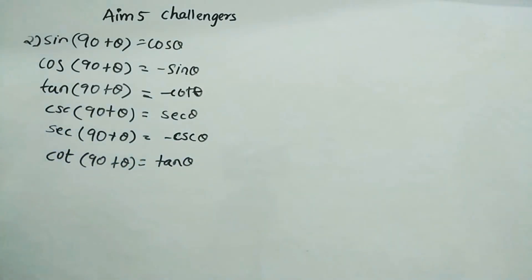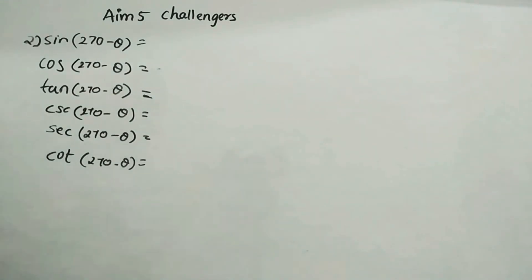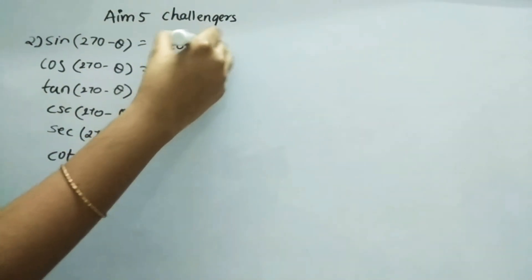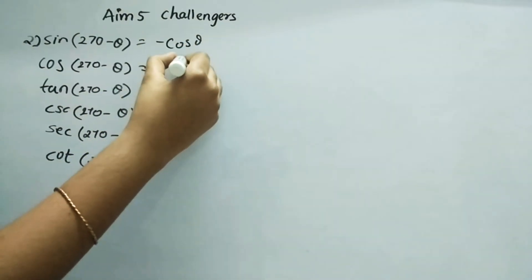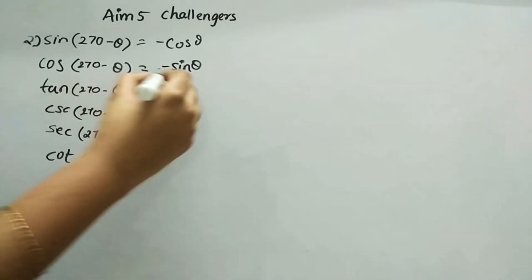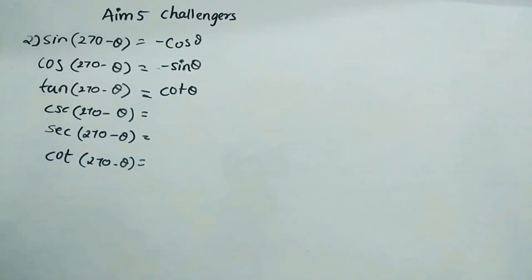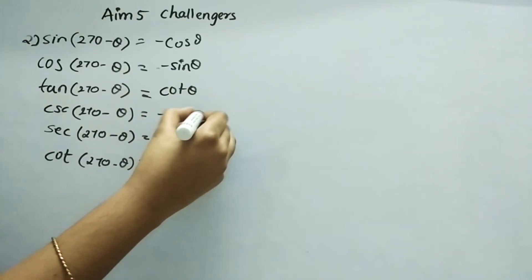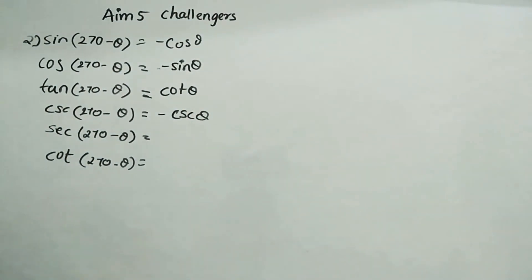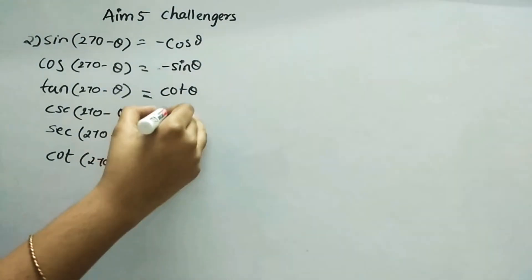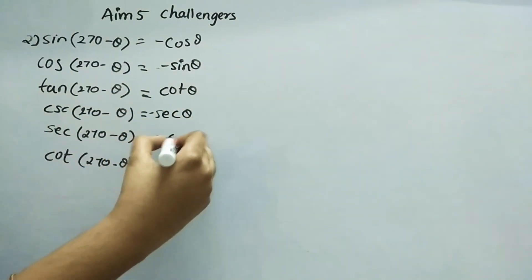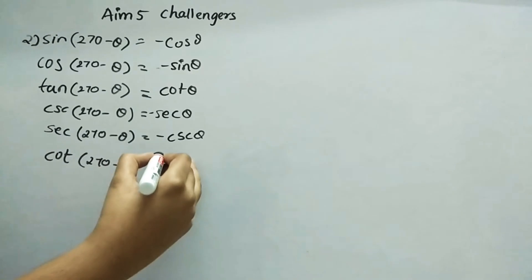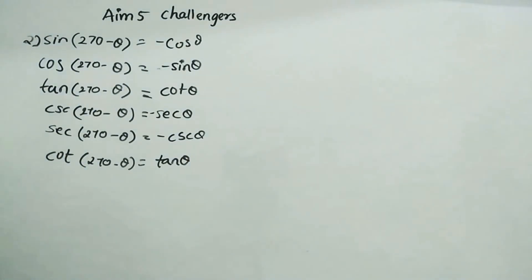First note this down, then we will see 270 minus theta. So everything for 270 minus theta: sin(270-θ) is minus cos θ. cos(270-θ) is minus sin θ. tan(270-θ) is cot θ. cosec(270-θ) is minus cosec θ. And cot(270-θ) is also noted. We completed the second question successfully.